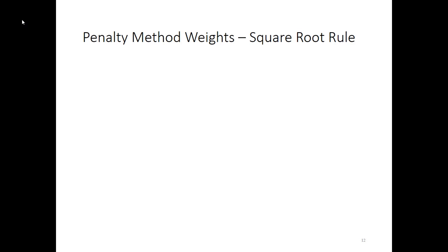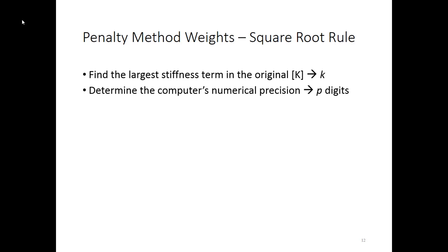A rule of thumb for the penalty method is called the square root rule. We want to find the largest stiffness term in the original K matrix. We'll just call that term K. Then we also want to know the computer's numerical precision, because that's going to tell us when our matrix is going to start to become singular. If we are approaching the precision limit with too many things approaching zero or too many numbers that are too close to each other. So how many digits are captured in the numerical precision? That's P. So then we choose a weight such that the weight is on the order of 10 to the K power times the square root of 10 to the P power. And if you do that, that should get you a reasonable weight that should satisfy mostly your constraints without making your stiffness matrix singular.